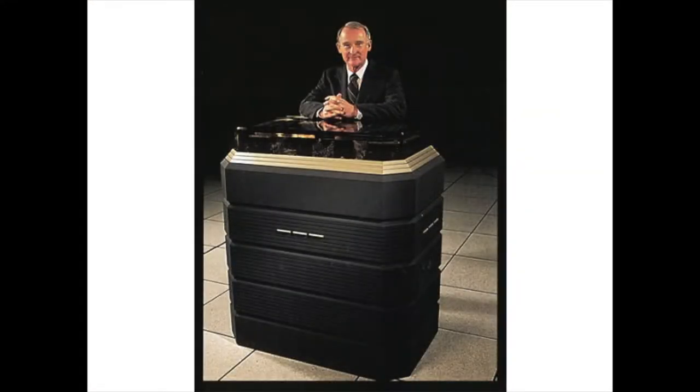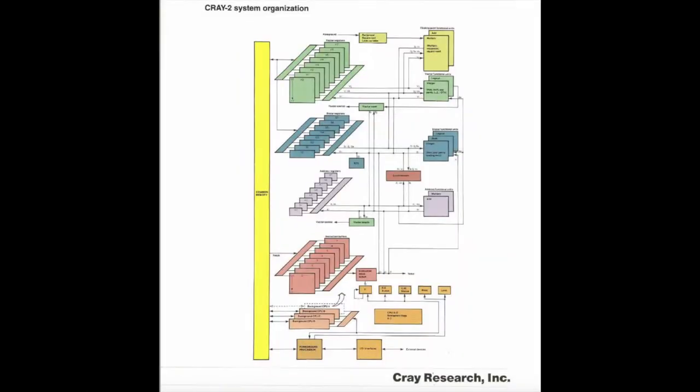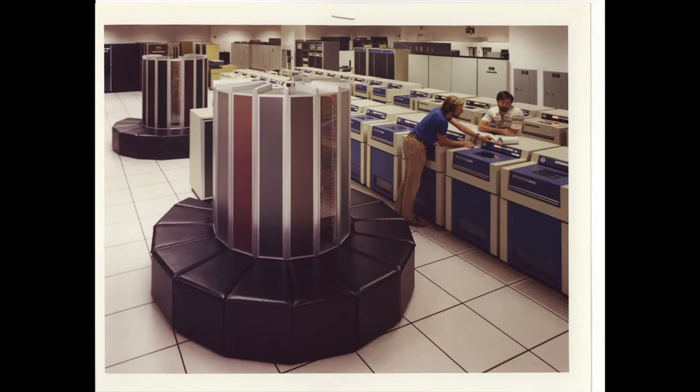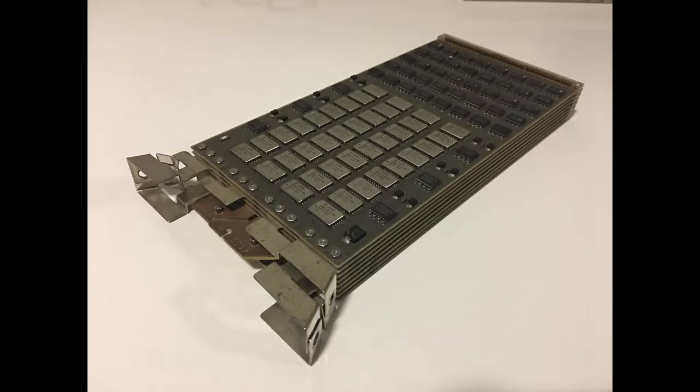For the Cray-3, he decided to set an even higher performance improvement goal, an increase of 12 times over the Cray-2. Cray had always attacked the problem of increased speed with three simultaneous advances: more execution units to give the system higher parallelism, tighter packaging to decrease signal delays, and faster components to allow for a higher clock speed. Of the three, Cray was normally least aggressive on the last. His designs tended to use components that were already in widespread use, as opposed to leading-edge designs.